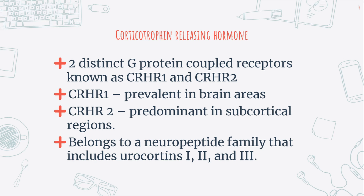Corticotropin-releasing hormone belongs to a neuropeptide family that includes urocortin 1, 2, and 3. These urocortins selectively bind both corticotropin-releasing hormone receptors and, together with corticotropin-releasing hormone, play crucial roles in controlling stress response, anxiety, depression, arousal, feeding behavior, energy metabolism, and digestive and cardiovascular function.